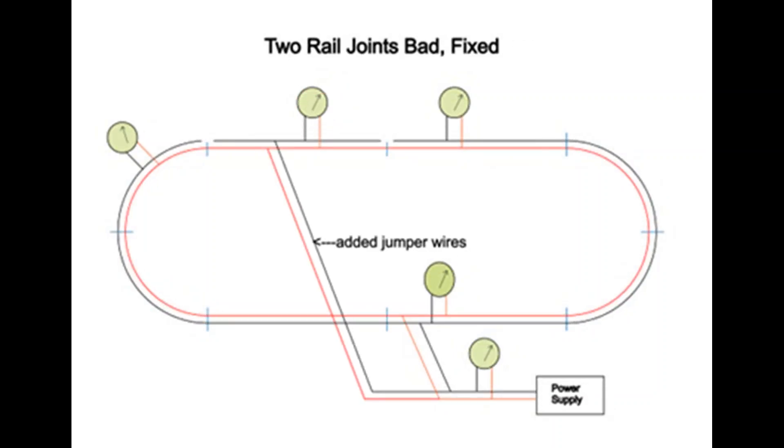There are two solutions to these bad joints. One, you can solder them, or two, you can solder jumper wires to the section and run the two jumper wires, in this case red and black, and connect them to the power supply.